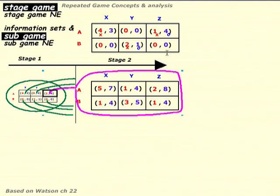I took red 1 and blue 4 and added it to the stage-two game cells to figure out the total payoffs. Everything in that cell is the sum of the numbers plus 1 and 4 — because if they play red A and blue Z in the first round, they get payoffs of 1 and 4. So these are the total payoffs at the end of the game if they played A and Z in the first round.